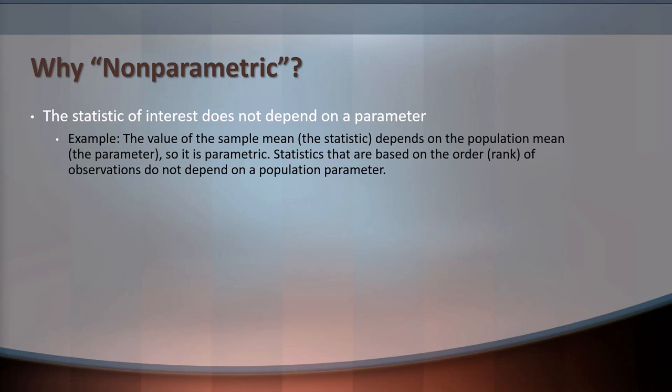For example, the value of the sample mean — that is, the statistic — depends on the population mean — that is, the parameter — so it is parametric. Statistics that are based on ranks of observations do not depend on any population parameter, so we could think of these as non-parametric.